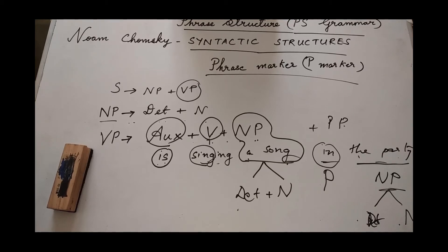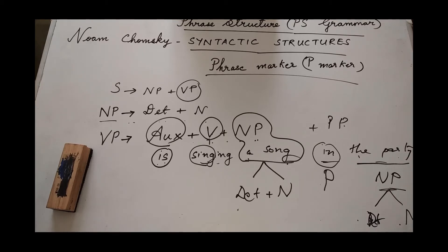In page number 114 of your textbook: S equals NP plus VP — rewrite rule number 1. Then NP equals determiner plus noun — that is rule number 3. Together you get: sentence equals determiner plus noun plus verb plus noun phrase. It is a simple rewrite rule.